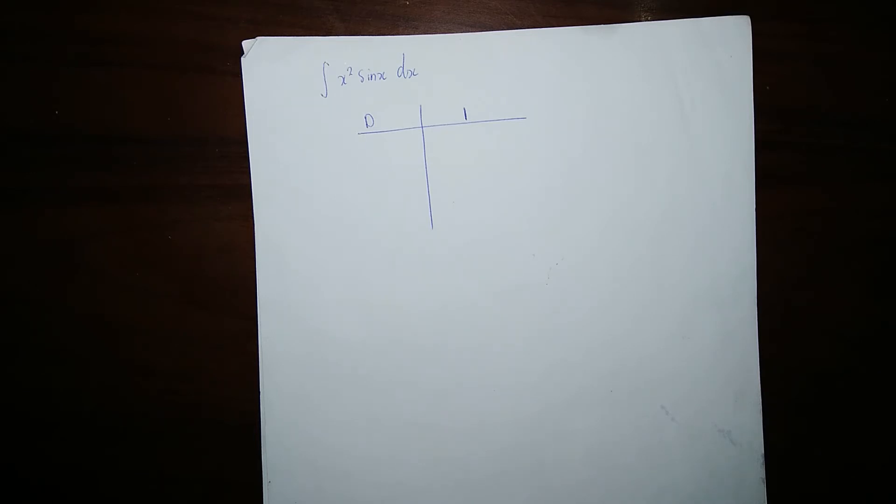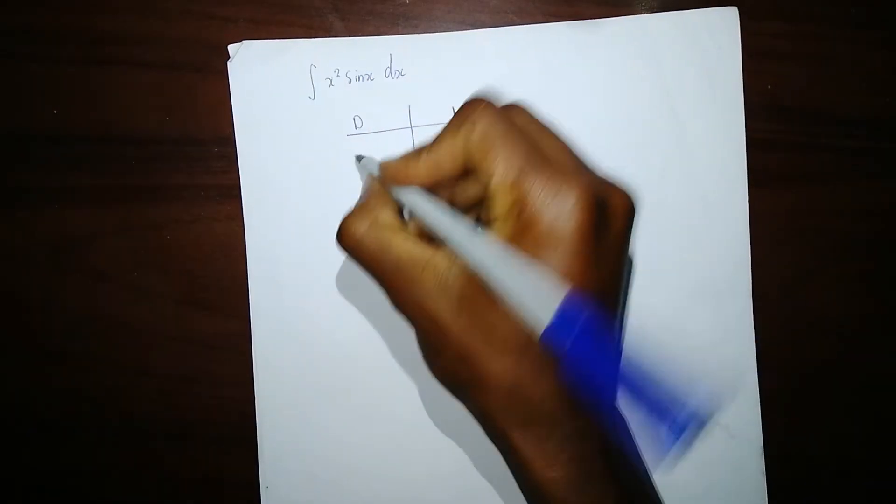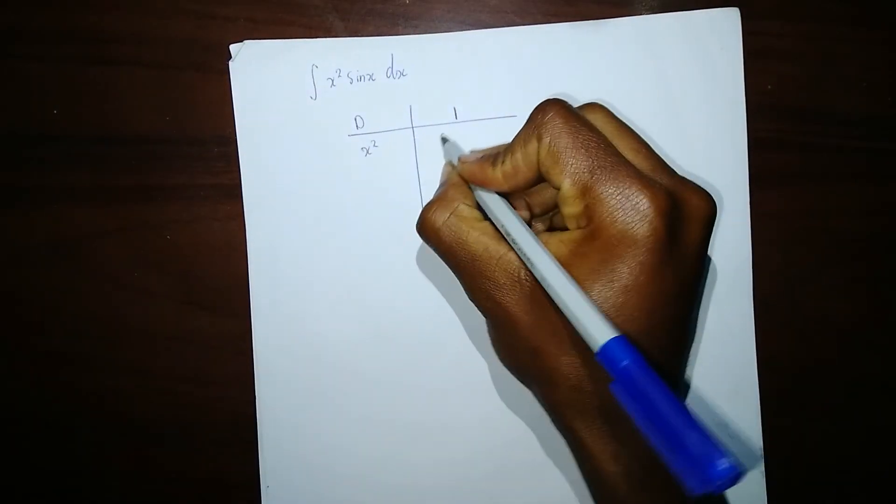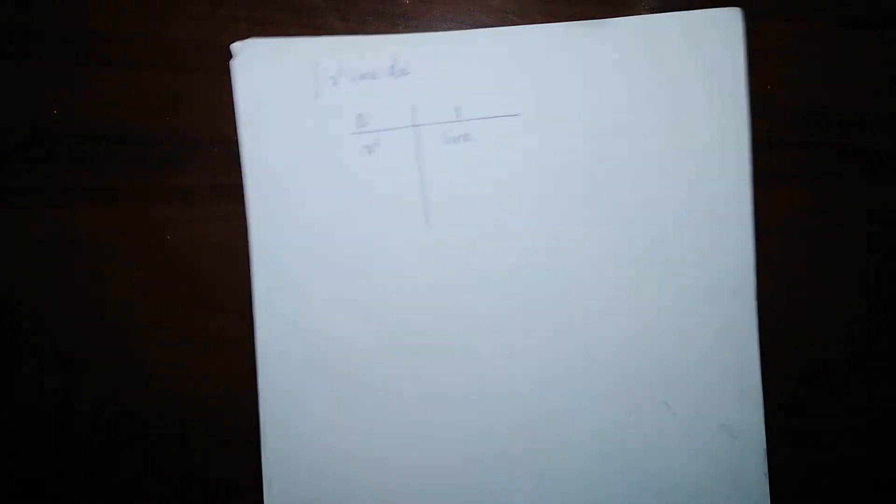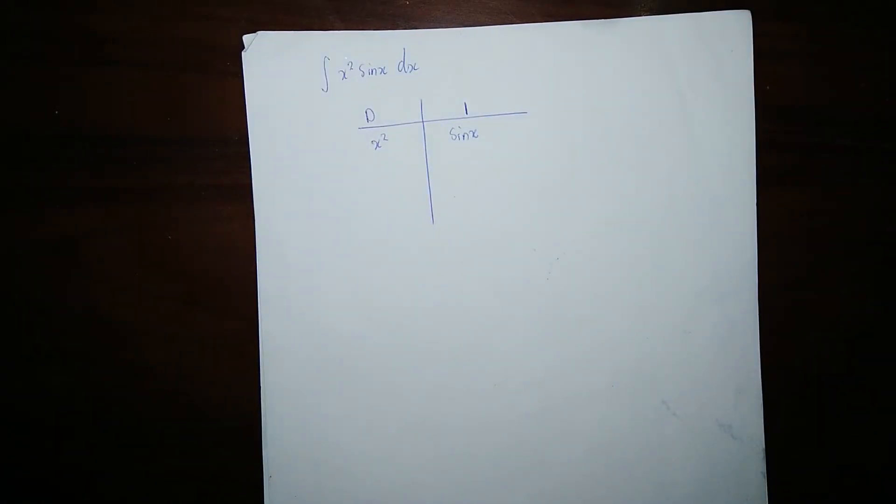x² can be differentiated to zero, but sin(x) cannot be differentiated to zero. So you put x² under differentiation and sin(x) under integration. You differentiate x² the first time.